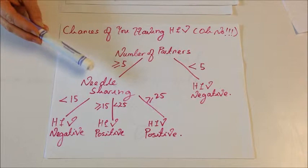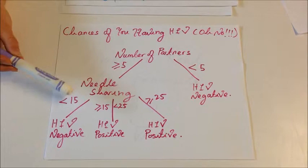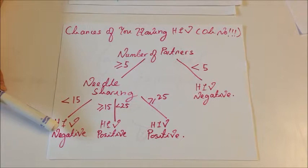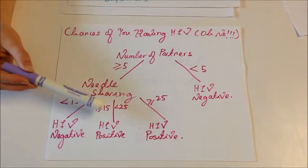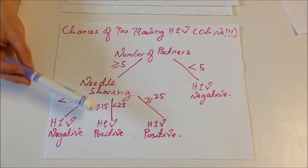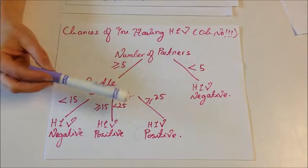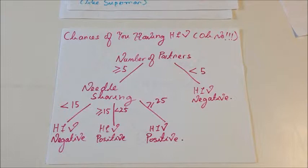So this is needle sharing. So if you have more than 5 partners and you needle share, but you have shared less than 15 needles, you are most likely to be HIV positive. This is a less likely probability than if you have more than 25 needles, then you are most likely to be HIV positive in this circumstance. So you can add percentages.